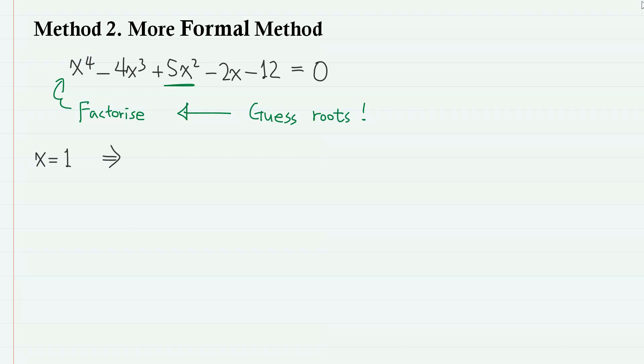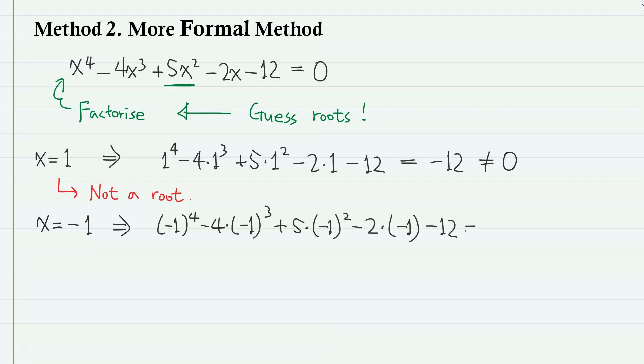For example, let us try x equals 1. Then, the left-hand side becomes minus 12, which is non-zero. So x equals 1 is not a root. Well then, let us try x equals minus 1. Then we have 1 plus 4 plus 5 plus 2 minus 12, which is 0. As you can see, x equals minus 1 satisfies the equation.